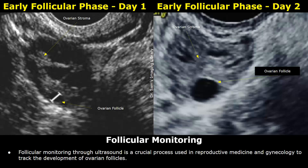Follicular monitoring helps to determine the timing of ovulation for natural conception or fertility procedures. Monitoring is done through transvaginal ultrasound. We will look at ultrasound images of the ovaries at different days of the menstrual cycle and learn how the follicles grow, how the dominant follicle appears, and what features are present during ovulation. After ovulation, you will see the presence of corpus luteum in the ovary.